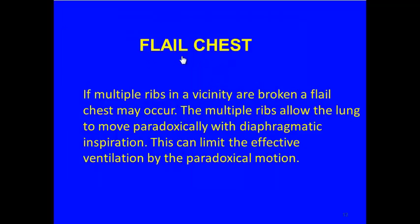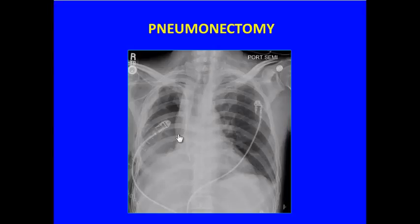Flail chest: if multiple ribs are fractured in a vicinity, instead of the normal bellows effect of the ribs pulling the lungs outward, we can get paradoxical motion where the ribs on one side are pulling out but the ribs on the opposite side are going in. You can see how the ribs are moving up on the right side and in the opposite direction on the other side — this is a so-called flail chest, showing that contralateral paradoxical motion of the ribs and chest wall.